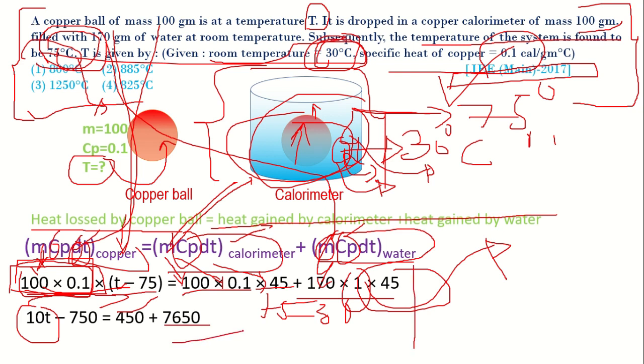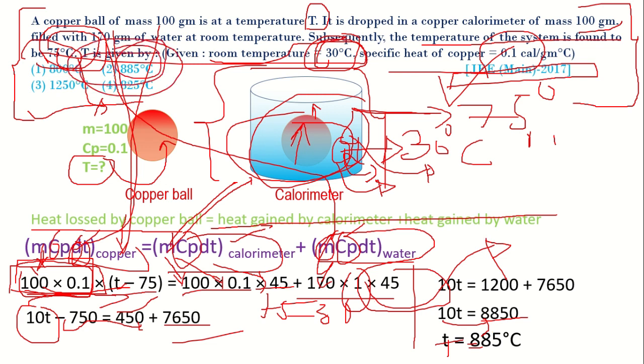If you solve this one you will be getting 10T equals 1200 plus 7650, that is taking this 750 to this side. Now moving further, 10T equals 8850. If you take 10 to this side you will be getting T equals 885 degrees Celsius. That is option 2 which is the right answer.